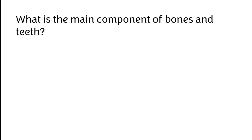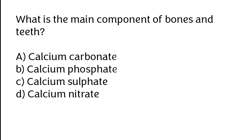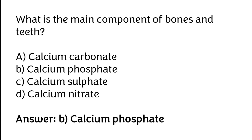What is the main component of bones and teeth? Calcium carbonate, calcium phosphate, calcium sulfate, or calcium nitrate. The correct answer is option B. Calcium phosphate is the main component of bones and teeth.